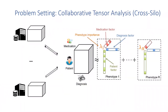Our problem setting is the cross-silo collaborative tensor analysis where the data is distributed at multiple institutions and cannot be directly shared with each other. We consider the horizontally distributed setting, which means each site has a subset of the samples and all sites share the same feature space.